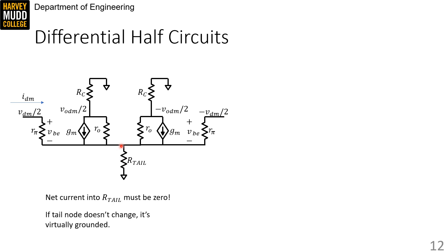If there's no small-signal current flowing in our tail, then the tail node never changes voltage. If a node doesn't change in a small-signal model, it's the same as it being grounded — small-signal models represent deviations from a large signal bias point, so nodes that don't deviate are small-signal grounds. That means we can virtually insert a ground on the tail node. And if we do that, the analysis becomes much easier because the left side and right side don't interact. We can just choose to analyze the left side, which is called the differential half-circuit.